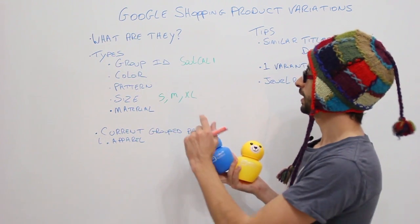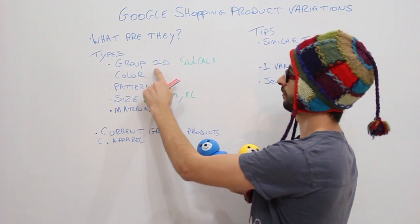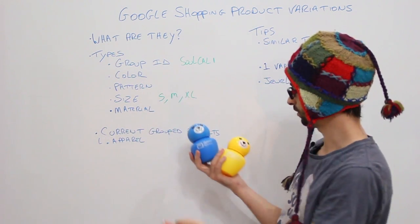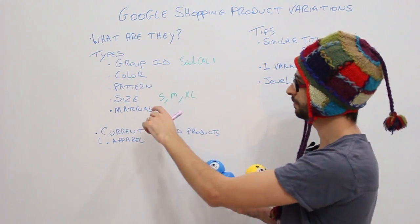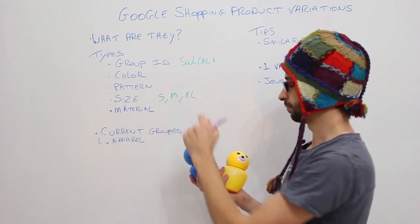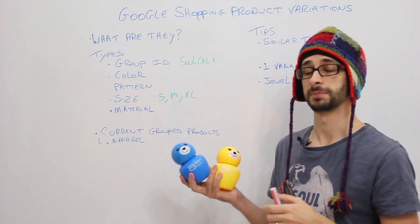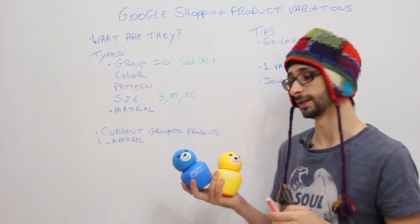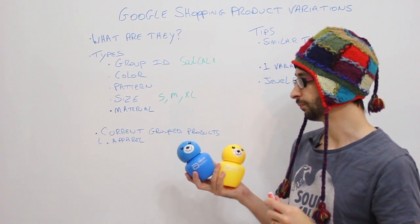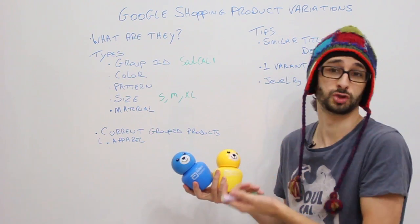Now if we change this to have a group ID, so we'll change this to toy for example and then just add the color blue and yellow, then these products can be added into the shopping without being duplicate.